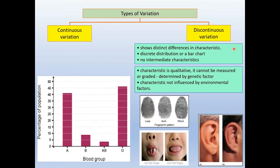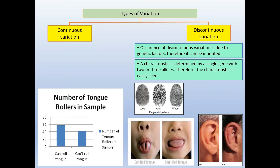Now we look at discontinuous variations. Discontinuous variation shows distinct differences in characteristics, meaning the differences are obvious. When data is plotted on a graph, a discrete distribution or a bar chart with separate bars is obtained. There are no intermediate characteristics. The characteristic is qualitative — it cannot be measured or graded, and it is determined by genetic factor and not influenced by environmental factor.